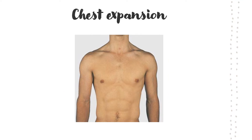Chest expansion depends on the extent of involvement. In this X-ray, only the lower part of the right upper lobe is affected, with the rest of the lung appearing normal, so chest expansion could be normal. On the other hand, if the entire right upper lobe or entire right lung is affected, chest expansion would be reduced. Middle lobe consolidation, being a small volume, may not impact chest expansion much. So chest expansion can be normal or decreased in lung consolidation, depending on the volume of lung involved.